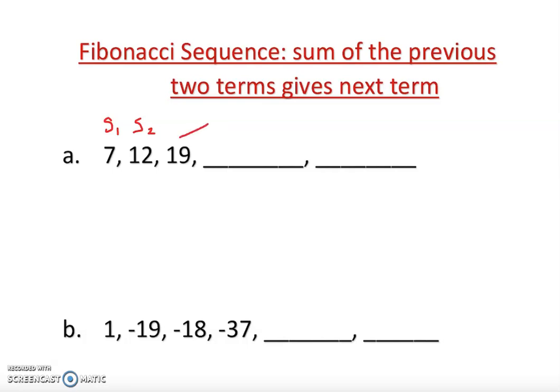In order to be a sequence three, it should be the sum of the previous two, S2 plus S1. What does it mean? So we have to add these two.